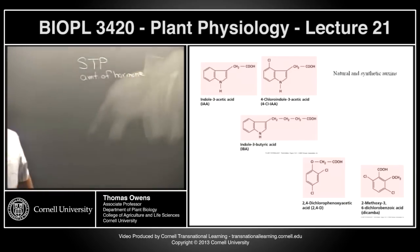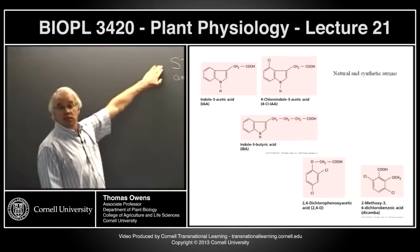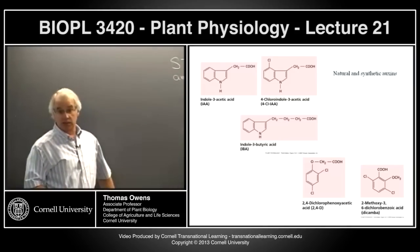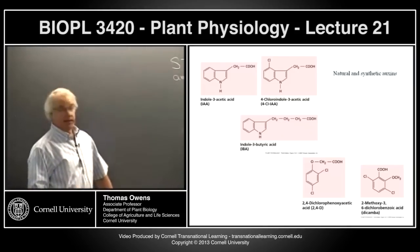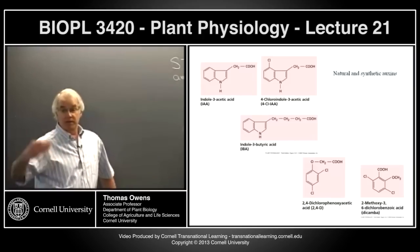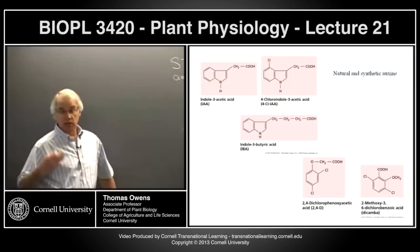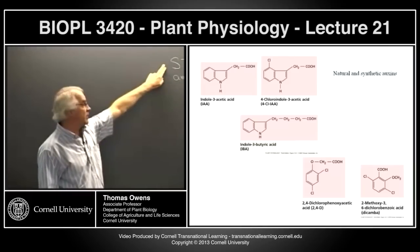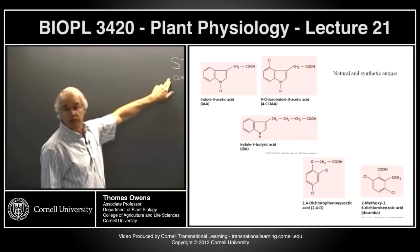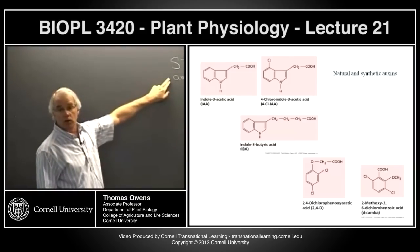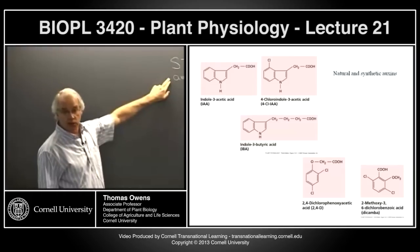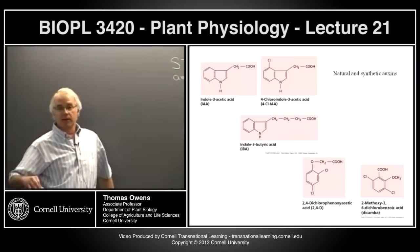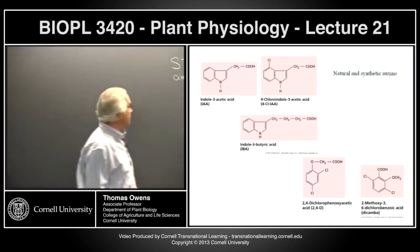Both the signal transduction pathway and the hormone amount are important. The signal transduction pathways are developmentally dependent—developmental expression of those pathways tells whether a cell has the pathway or not. What we want to focus on now, not just for auxin but for all hormones, is what determines the local concentration of the hormone at any given part of the plant, because there are a number of different things going on.